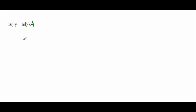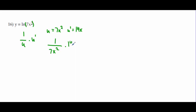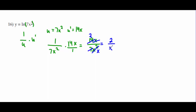Problem 16: ln(7x²). Using 1/u times u′, u = 7x² and u′ = 14x. So: 1/(7x²) times 14x = 14x/(7x²). Simplifying: 14 and 7 are both divisible by 7 giving 2, and x/x² simplifies to 1/x, leaving 2/x.